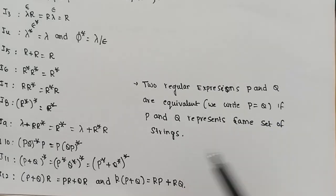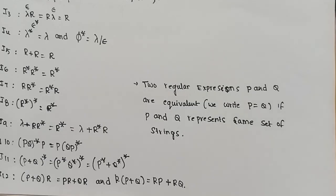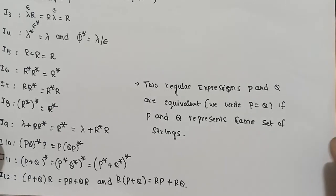If P and Q represent the same set of strings, then the two regular expressions are equivalent. P equal to Q means they represent the same set of strings, so P is equivalent to Q.